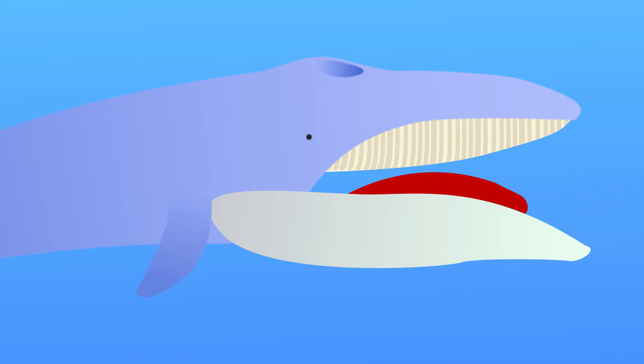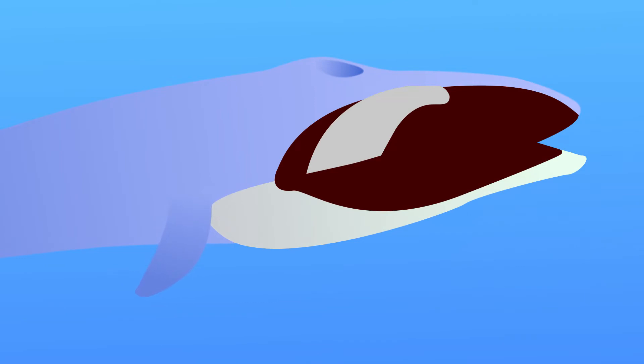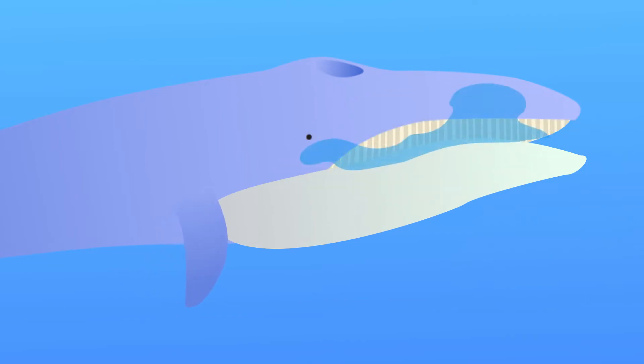It acts like a bristly filter, so when the blue whale pushes its giant tongue up against the roof of the mouth, all of the sea water squirts out from between the baleen and traps the krill inside, which can then be swallowed.